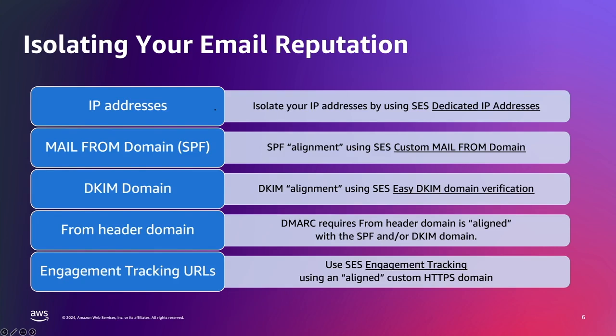To use dedicated IP addresses with Amazon SES: when you create a new Amazon SES account, by default your emails are sent from IP addresses that are shared with other SES account holders. You can also lease dedicated IP addresses that are reserved for your exclusive use. This gives you complete control over your IP reputation and enables you to isolate your IP reputation from different segments within your email programs.